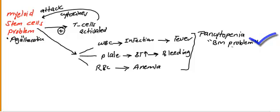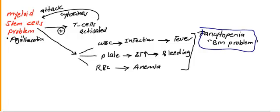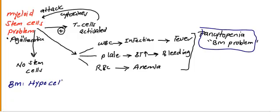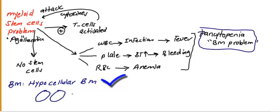In this case, the bone marrow problem is a myeloid stem cell problem. If there is a myeloid stem cells problem, in the lab tests you will see pancytopenia in the blood film. Also, since there are no stem cells, the bone marrow will be hypocellular. The bone marrow looks like this — there are fat globules all over the bone marrow. You will not see cells; maybe you will see a little bit of lymphocytes here and there, but most of the bone marrow will be hypocellular.